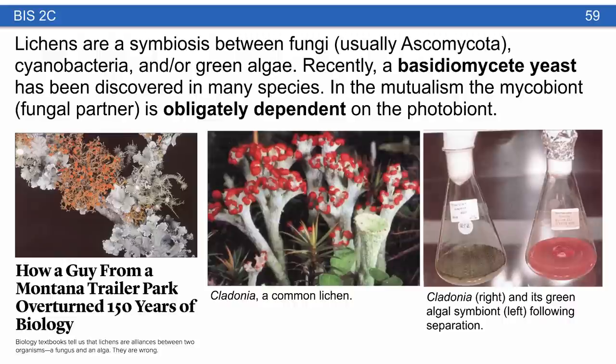Lichens are symbiotic organisms with a couple of different parts — usually an ascomycete fungus, associated with a cyanobacterium and/or a green algae. Recently, based on an article you read, there may also be a basidiomycete yeast involved in many species that produces acids offering protection. If you separate the symbionts from the lichen, the photobiont — the cyanobacteria or green algae — can live on its own, but the fungal symbiont cannot. The fungal partner is obligately dependent on the photobiont.